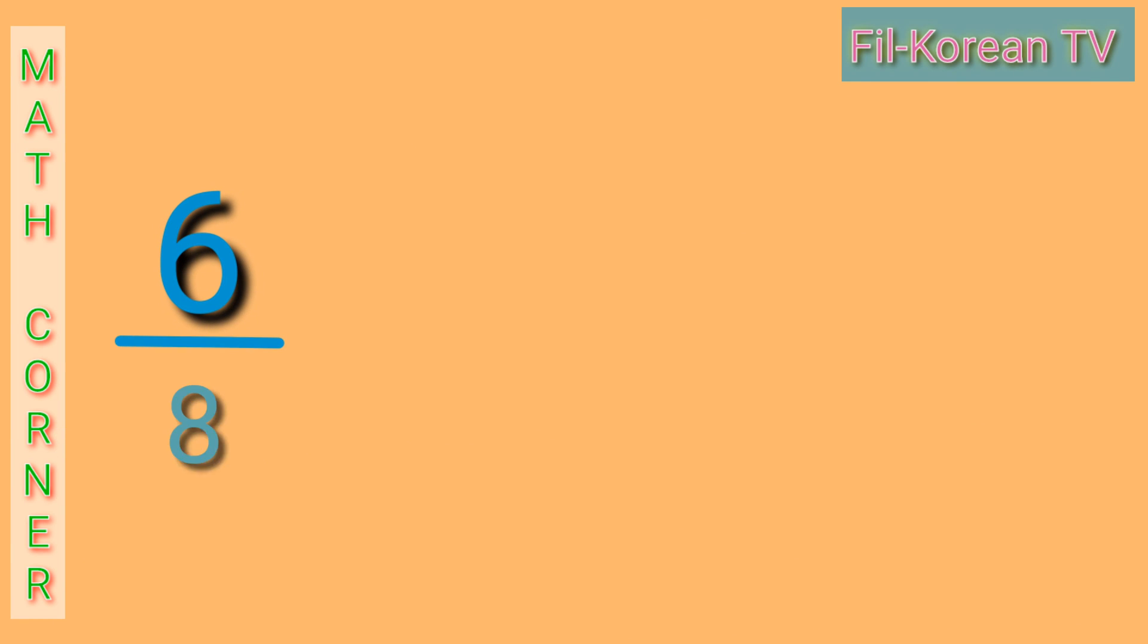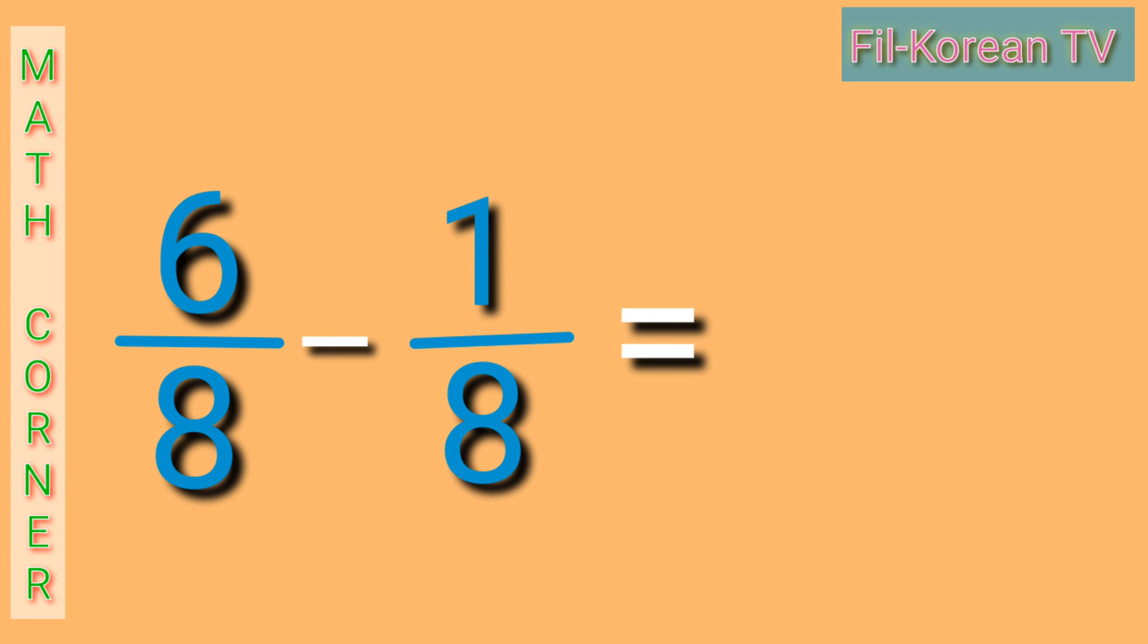Last example, 6 eighths minus 1 eighth. Let us answer. 6 minus 1 equals 5. Copy the denominator 8. The answer is 5 eighths.